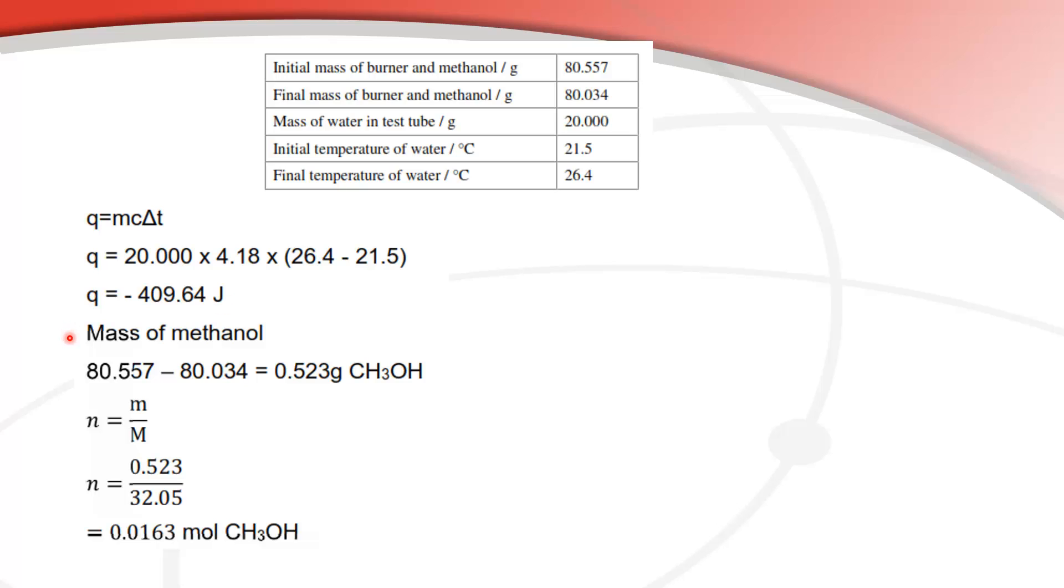Next I calculate the mass of methanol used and from the table you can see it's 80.557 minus 80.034 and that gives us 0.523 grams of methanol.